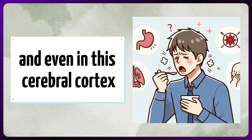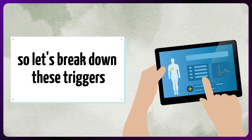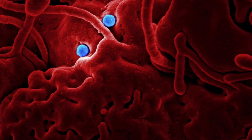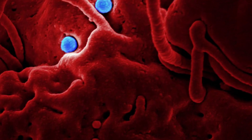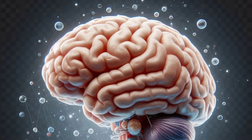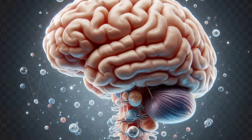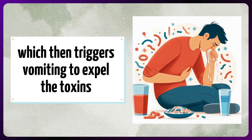One common cause is gastrointestinal infections or food poisoning. When harmful bacteria or viruses enter the stomach, they irritate the lining, sending distress signals to the brain, which then triggers vomiting to expel the toxins.